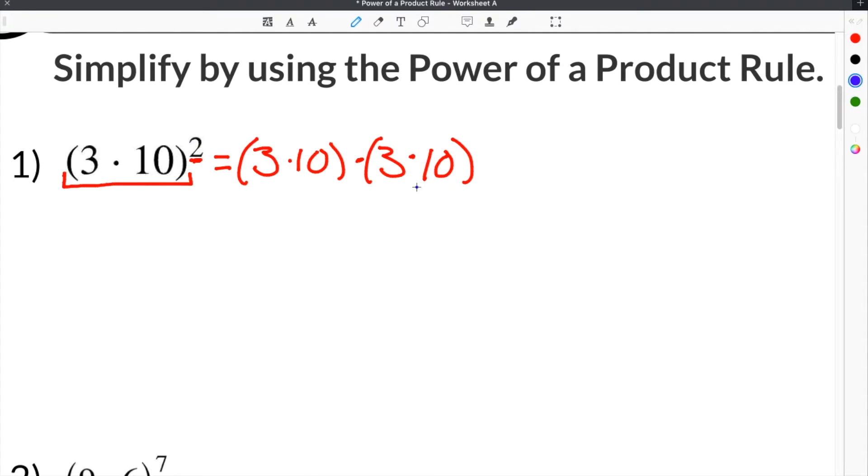If you were to simplify this, you would rewrite it as the 3's together and the 10's together. So we would have 3 times 3 times 10 times 10. And then to simplify this, 3 times 3 you could write as 3 squared, and then 10 times 10 you could write as 10 squared. This will be your solution.